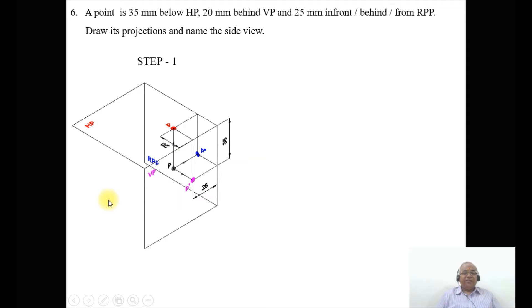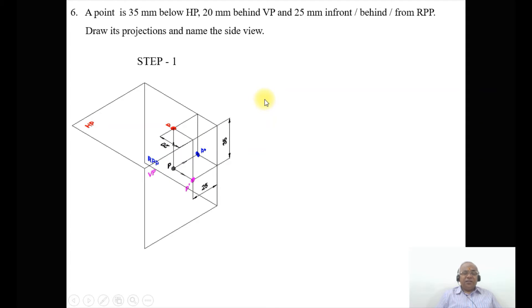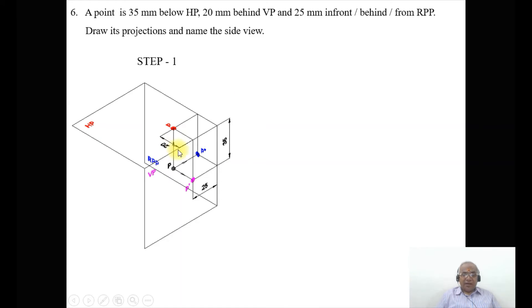As we look from the left side view, the object is between the right profile plane and the observer. But if we look from the right side view, the plane is between the object and the observer. Since the right side view satisfies the same condition as the front view, we should always look from the right side view for the third quadrant.